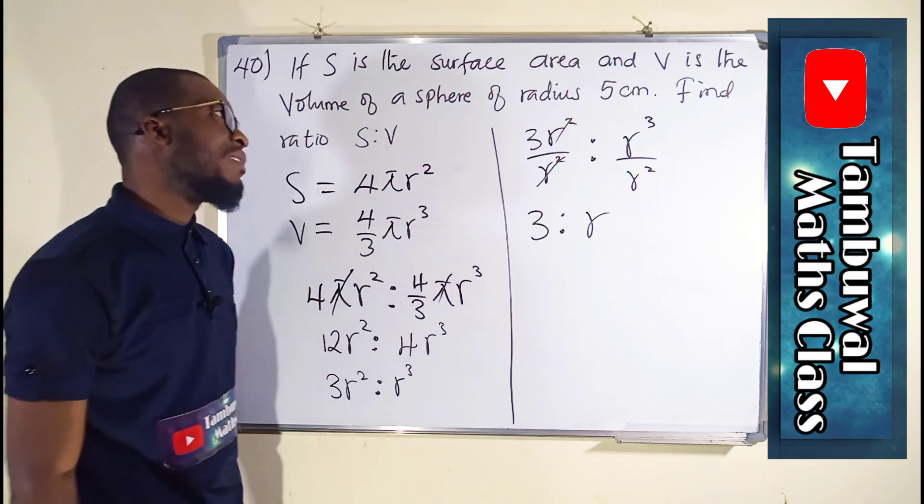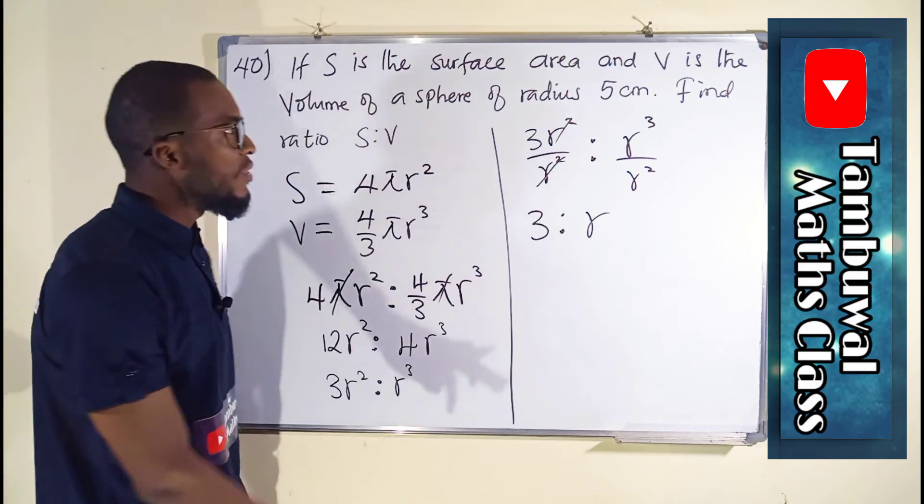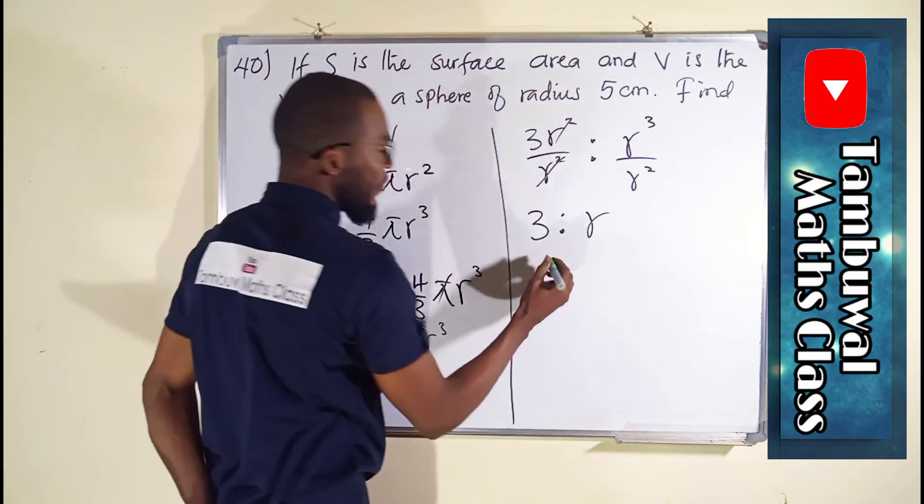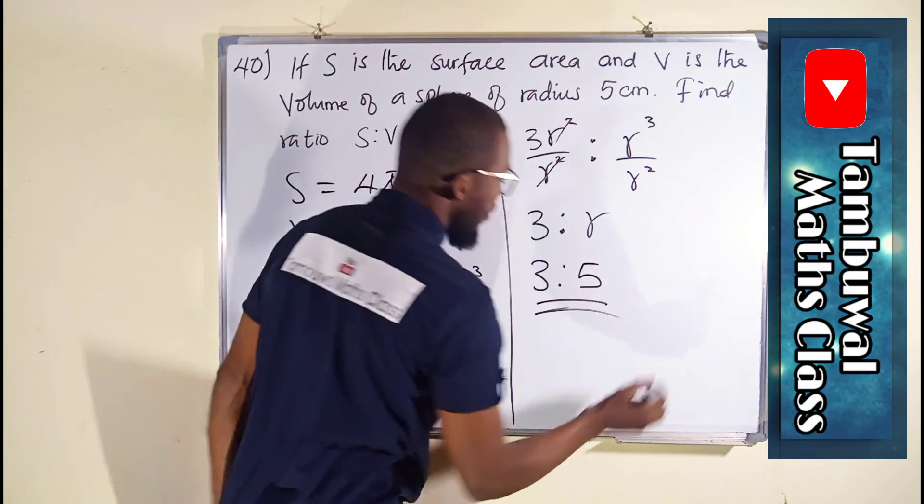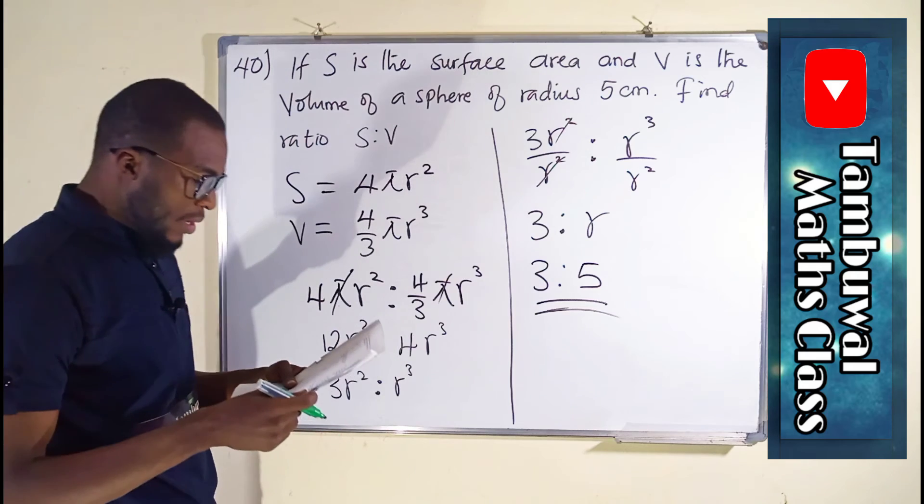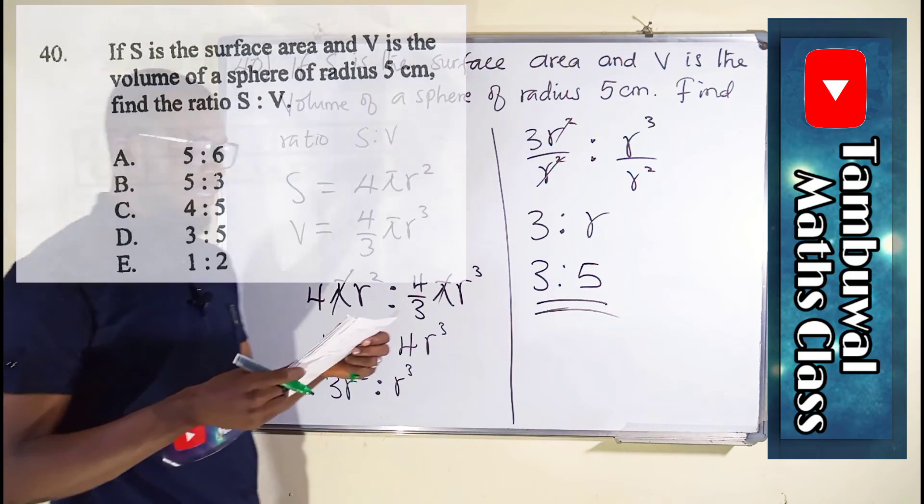But from the question, we are given that r, which is our radius, is 5. So, finally, we have 3 to 5. And this is our answer. And we have it here as option D.